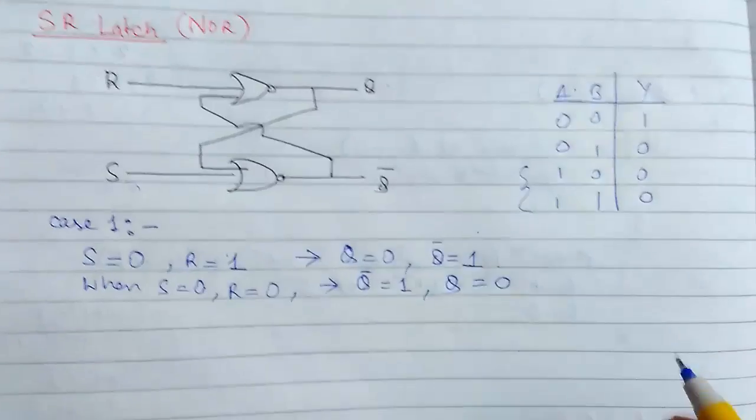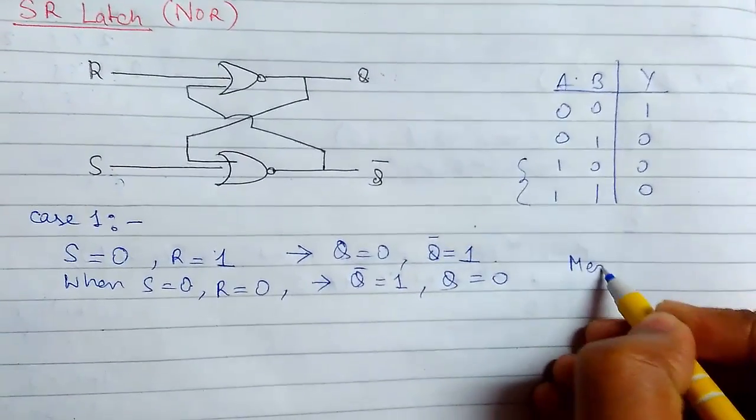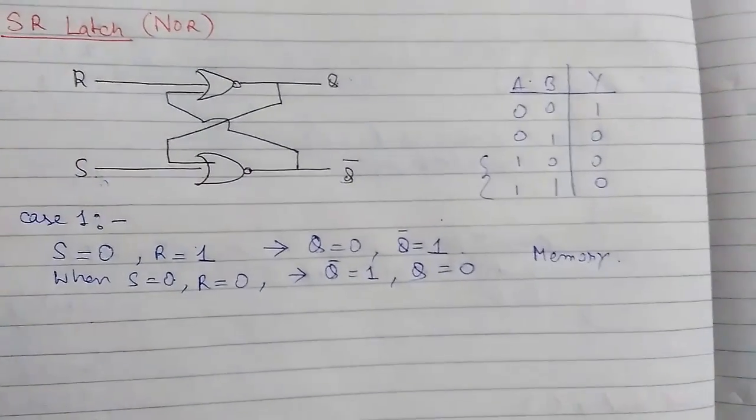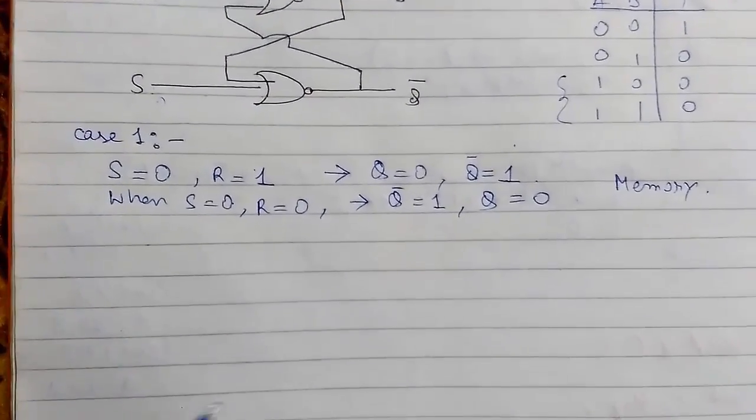So it gets verified. We can say it is memory condition, our previous value has not been changed. So the value gets stored in the memory.